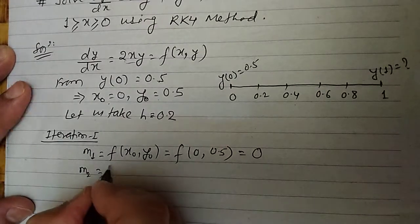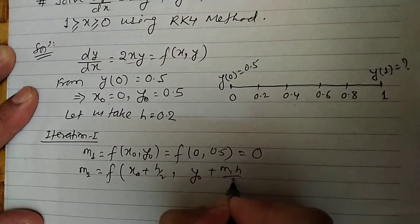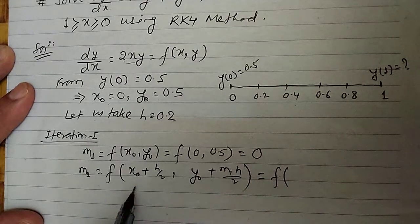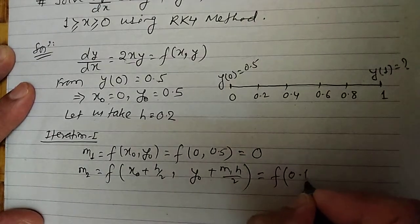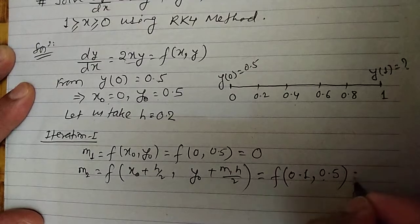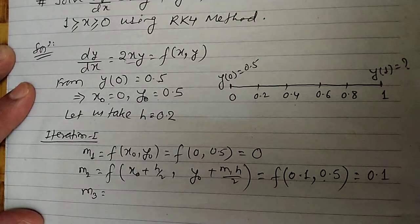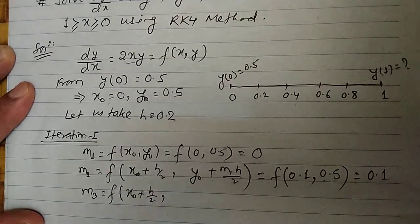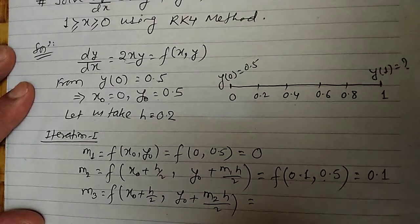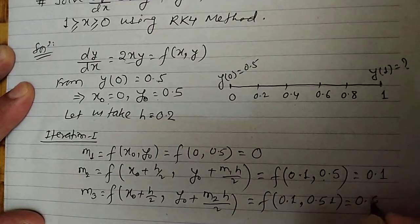m2 equals f(x0 + h/2, y0 + m1·h/2) = f(0.1, 0.5), and since f = 2xy, that gives 2 × 0.1 × 0.5 = 0.1. m3 equals f(x0 + h/2, y0 + m2·h/2) = f(0.1, 0.51), and that equals 0.102.